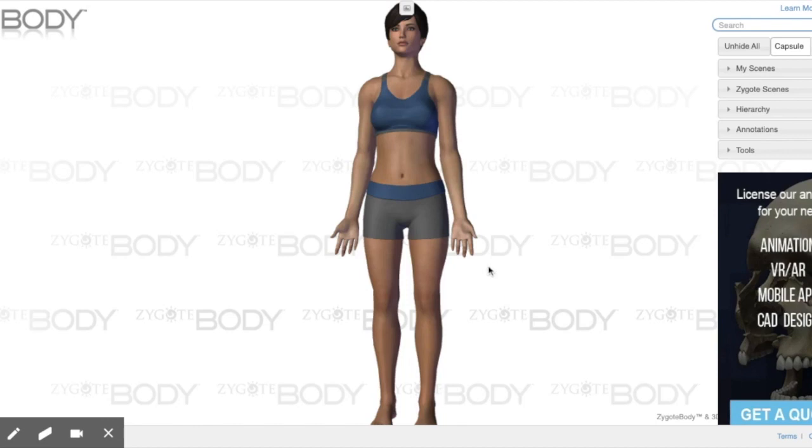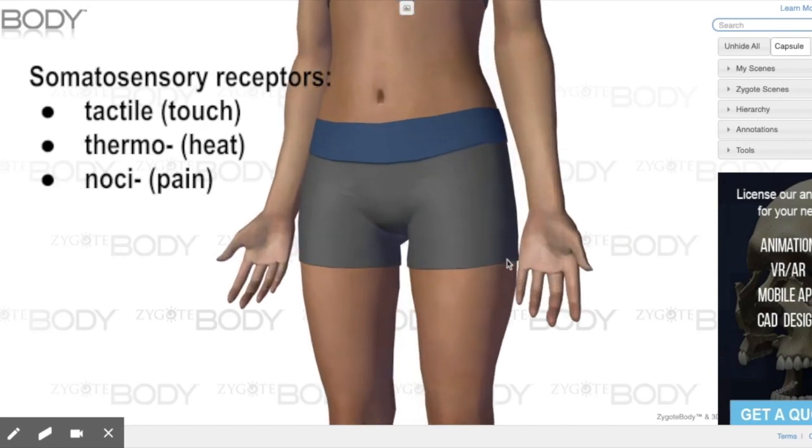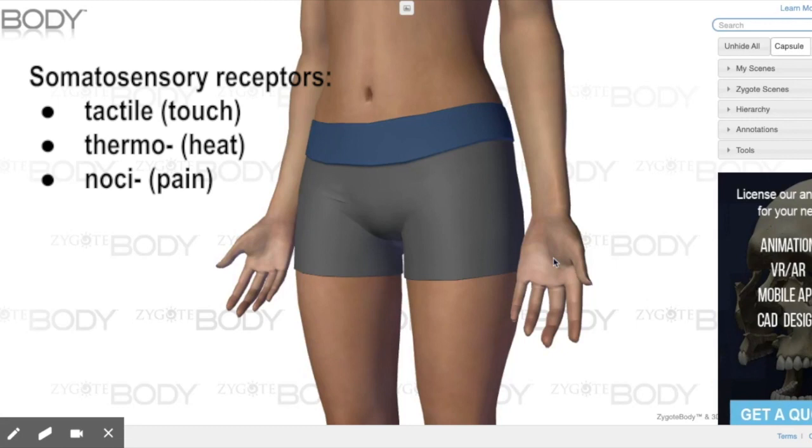Let's begin by imagining that maybe this person has taken her left hand and grabbed a hot pot handle. Now in the dermis, there are going to be all sorts of different types of receptors. There are going to be touch or tactile receptors, there will be heat or thermoreceptors, and there will also be various pain or nociceptors. These will be in the dermis.